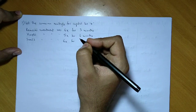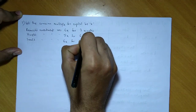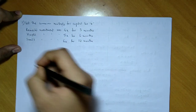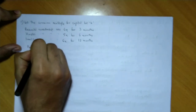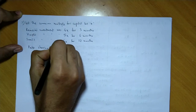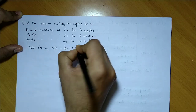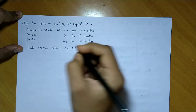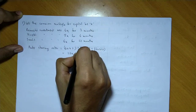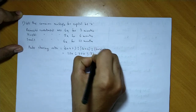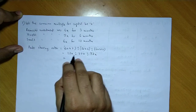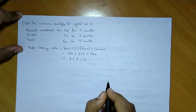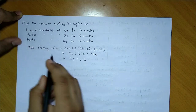Sunil stays until the end of the year, so his investment of 6x is for 12 months. Since the investments are different, we calculate the profit sharing ratio. Therefore, the profit sharing ratio is 4x×3 : 5x×6 : 6x×12, which gives us 12x : 30x : 72x.